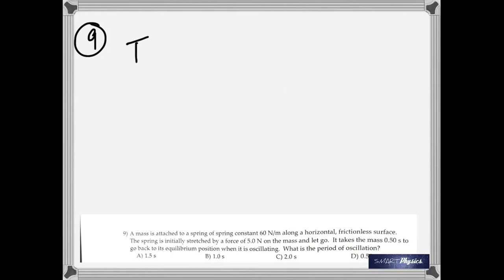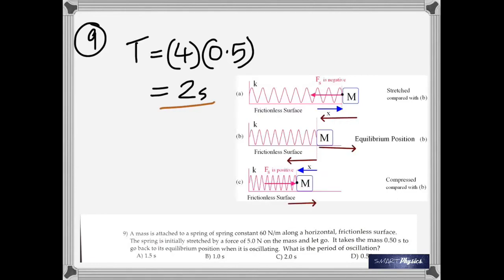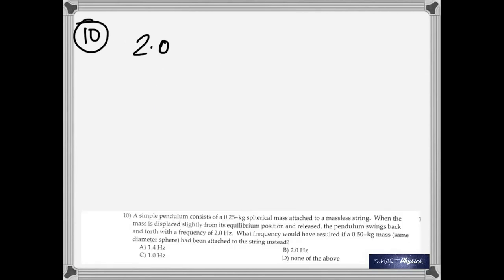Number nine uses the same spring problem as before, but asks for the period of oscillation. It's 4 times 0.50 seconds, because 0.5 seconds is the time taken for one quarter of an oscillation — as shown in the diagram, going from one extreme to equilibrium is one quarter of a full oscillation. Therefore the period is 2 seconds.